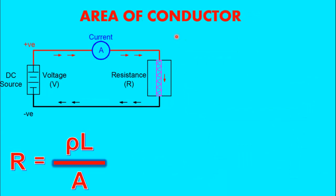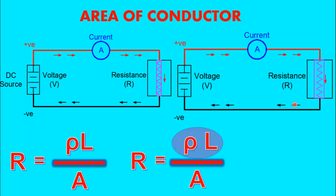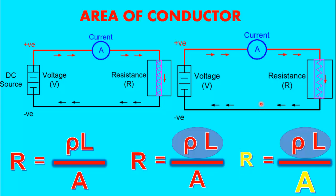Now let's talk about the cross-sectional area of the cables or wires through which the current passes. In this circuit I have used a larger cross-sectional conductor while keeping the other two factors — resistivity and length — constant. If the area of the conductor increases, the resistance of the electrical circuit will reduce and in turn the current will increase. So remember: if voltage remains the same and only the conductor area increases, the overall current will increase because the overall resistance decreases.